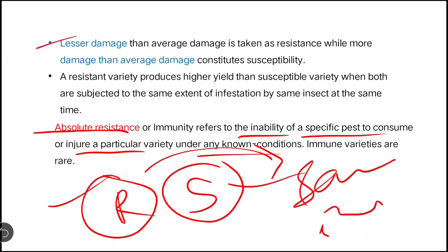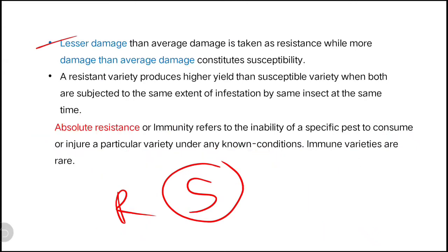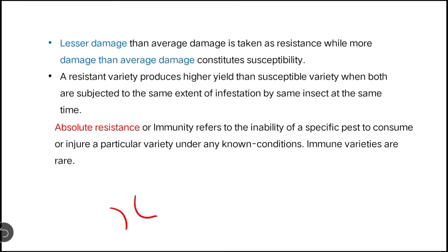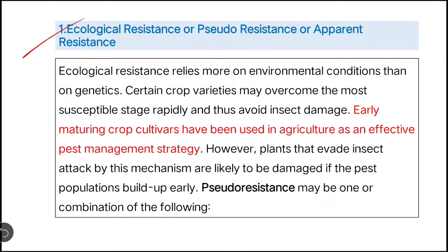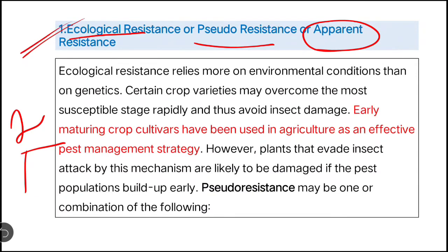A plant showing absolute resistance cannot be attacked by the insect under any condition, but such plants are very rare. Next, we will see the types of resistance. There are two types: one is ecological resistance, also known as pseudo-resistance or apparent resistance — remember all three names. The other is genetic resistance.